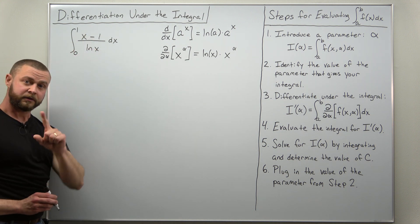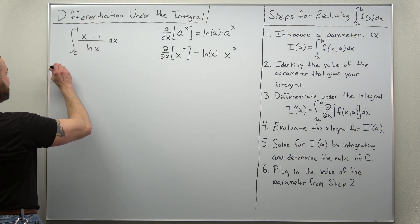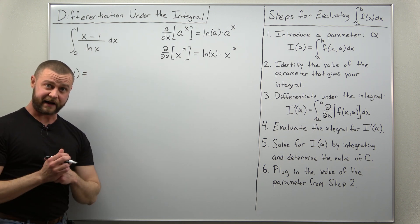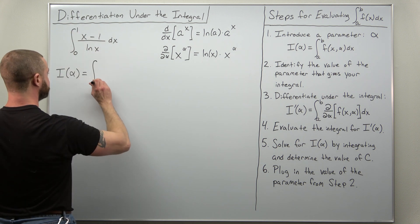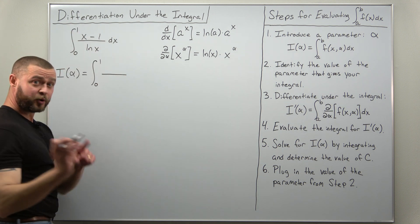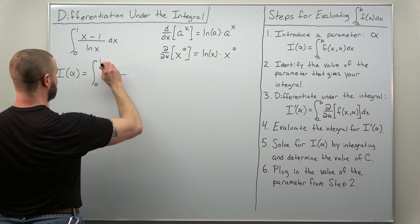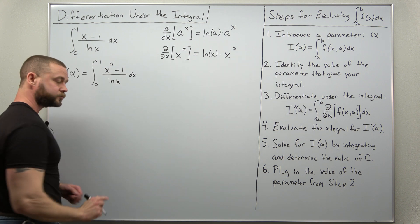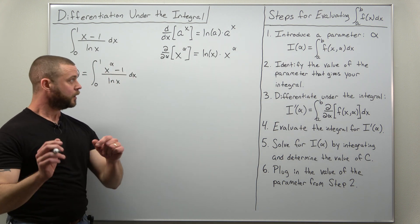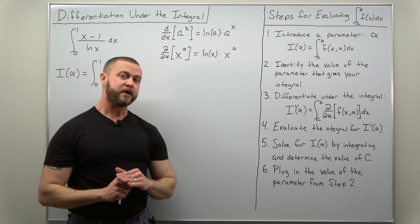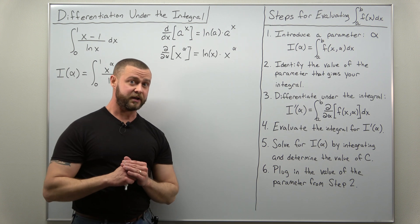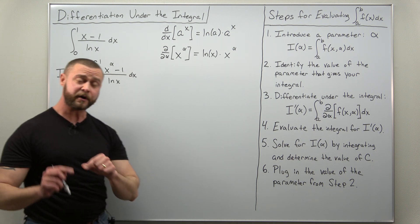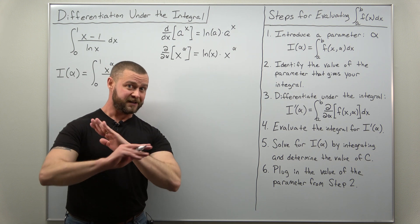That is Step 1: we introduce the parameter by putting it in the exponent of x. We write the integral in function notation as I(α), the integral from 0 to 1 of (x to the α minus 1) divided by ln(x). There's no straightforward way to do this — this is why it's an art, not a science.